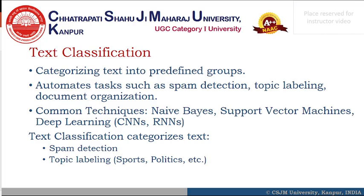Text classification involves categorizing text into predefined labels or groups. It is one of the core tasks in NLP and is widely used in spam detection, topic labeling, language detection, and more. For example, when you receive an email, your email service automatically classifies it as spam or not spam based on its content. Similarly, news articles can be sorted into categories like politics, sports, or health. Text classification systems use supervised machine learning with algorithms like Naive Bayes, SVM, and deep learning models like CNNs and RNNs.